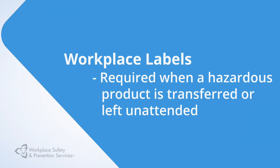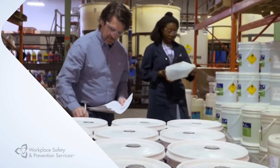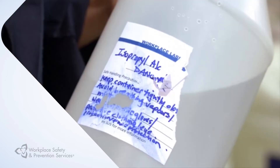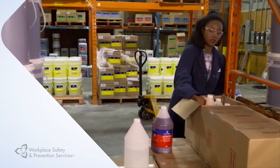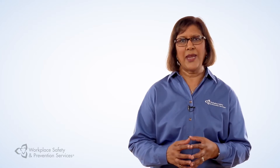Workplace labels are usually handwritten and are required when a hazardous product has been transferred from one container to another and will not be used immediately or may be left unattended. A workplace label is also required if the original supplier label is damaged or missing, or when your company produces a hazardous chemical. A faded or smudged label should be reported to a supervisor so it can be replaced promptly. Hazardous products in piping and process vessels also need to be identified using product identifiers, labels, color coding, or placards.